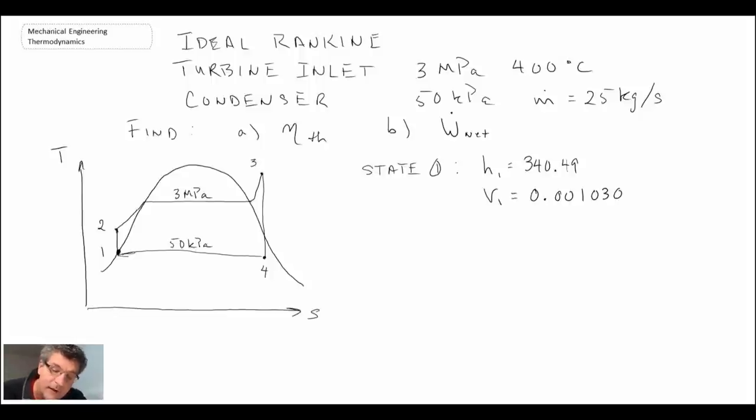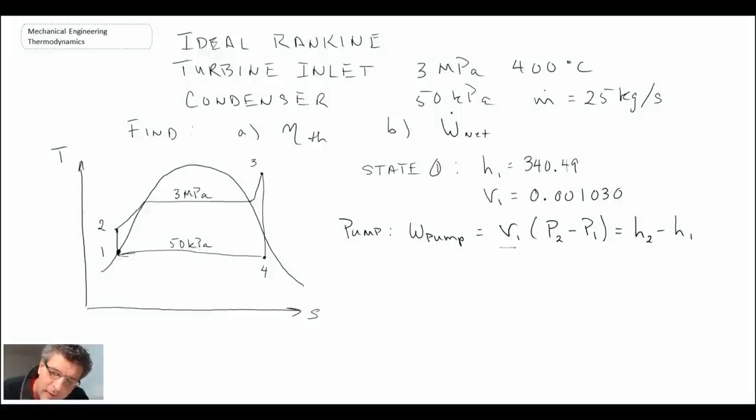Now we have a pump which takes us from one to two. We'll take advantage of our reversible steady flow work equation, which enables us to say the work in the pump is the specific volume at one multiplied by the change in pressure between state two and state one, and that equals the change in enthalpy. By knowing h1, we can use this equation to determine h2.